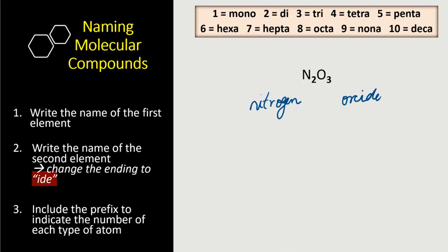Now step number three tells us to write down the prefix to indicate the number of each type of atom. Now let's look at the subscripts. For nitrogen we have two and this subscript tells us that there are two nitrogens and two means di. So let's include that. Let's add that in front of the name. So dinitrogen. We have two nitrogens.